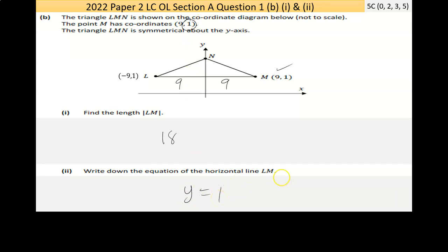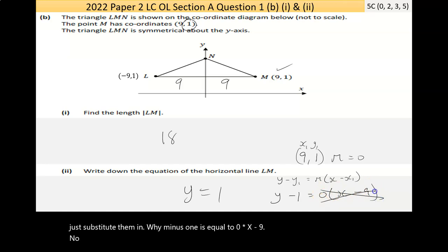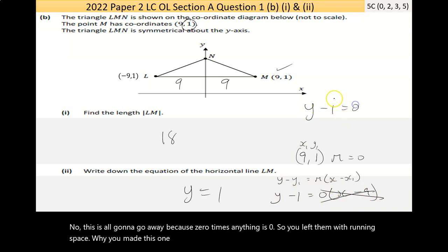Now, there's another perspective would be if I use the y minus y1 is equal to m times x minus x1 formula. I have a point 9, 1, and the slope there is equal to 0. So, this is my x1, my y1. I could just substitute them in. y minus 1 is equal to 0 times x minus 9. This is all going to go away because 0 times anything is 0.